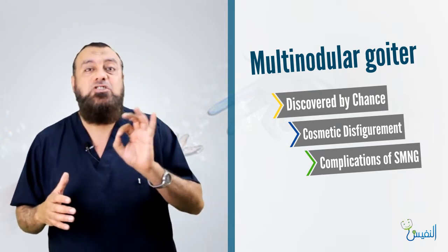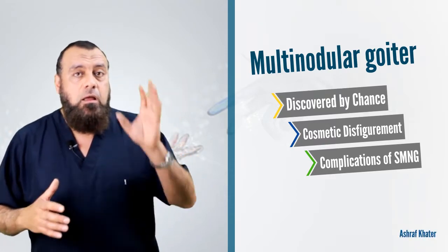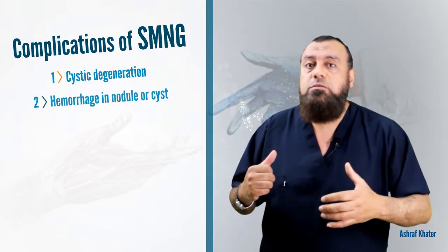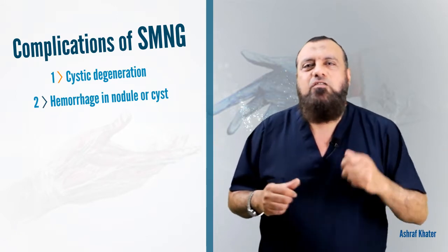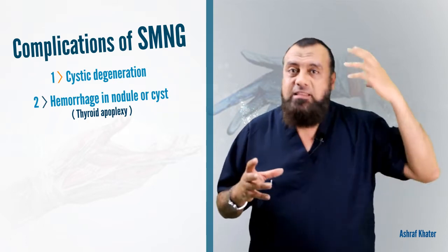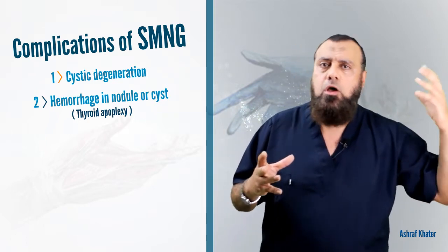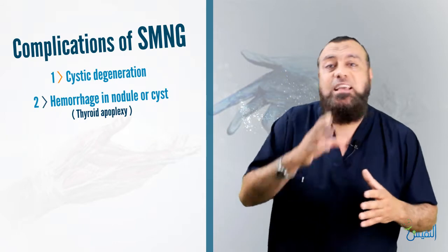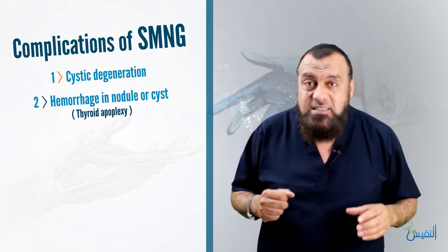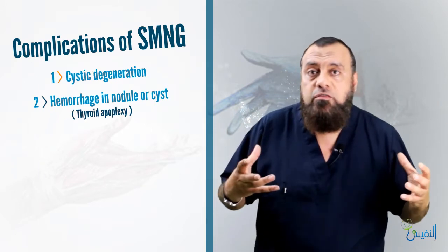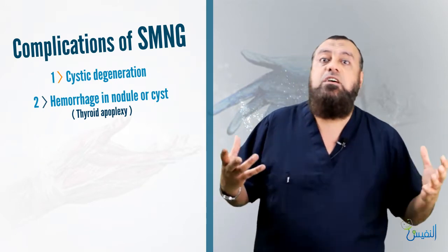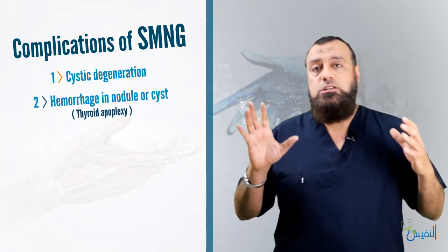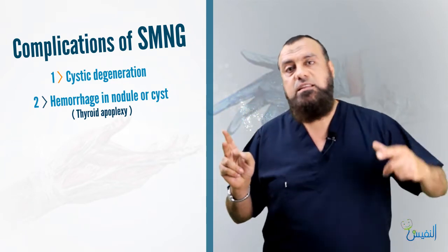The complications of simple multinodular goiter (SMNG): number one is cystic degeneration. The risk here is that hemorrhage may occur inside a cyst, called thyroid apoplexy — exactly like brain apoplexy. Hemorrhage inside a thyroid cyst may cause sudden enlargement of the nodule with sudden discomfort or sometimes suffocation.